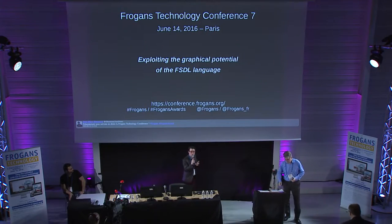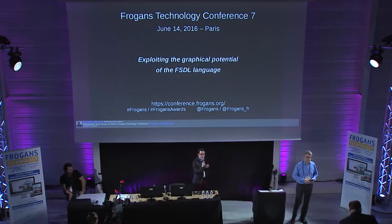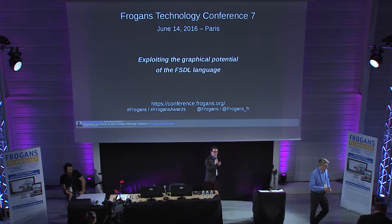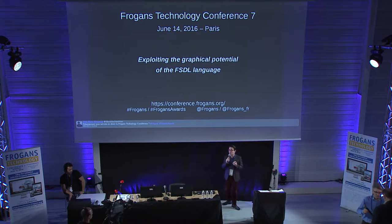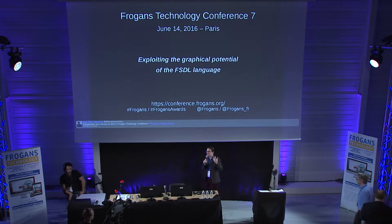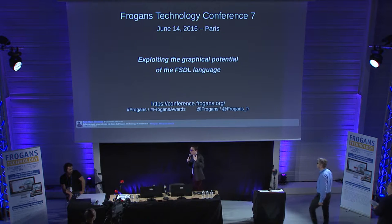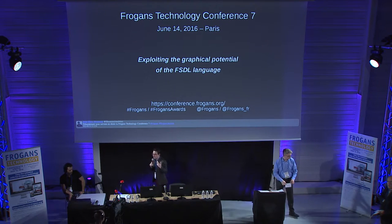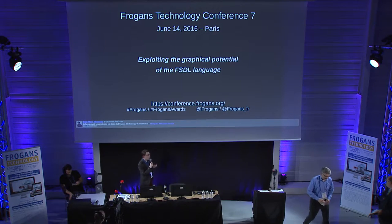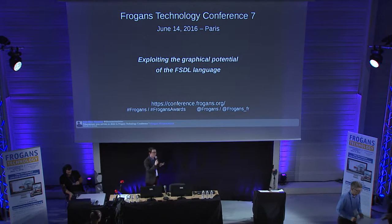Let's switch and move to the first part of our conference — the core relationship, which consists in making content available to our users. To do so, we're going to publish Frogans sites. The best thing to do is not to talk about this, but to show it.